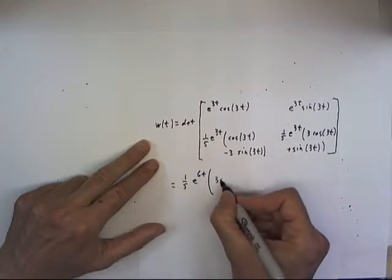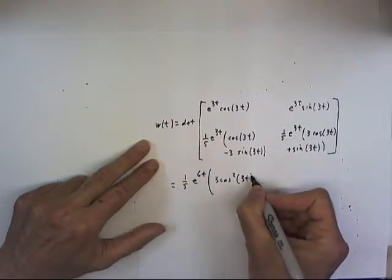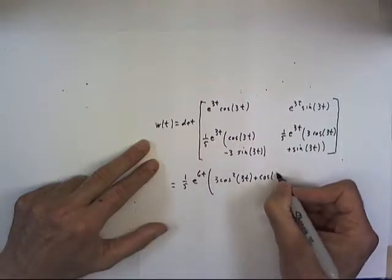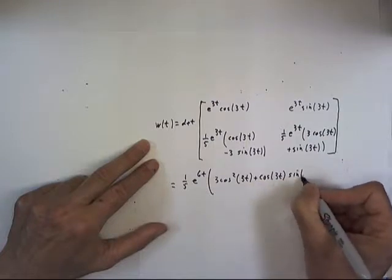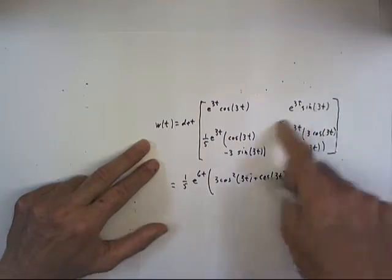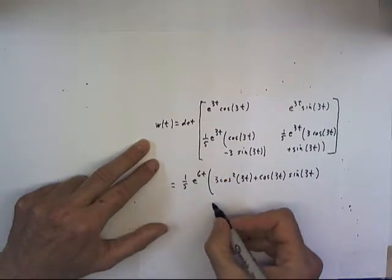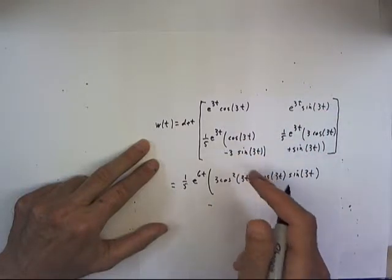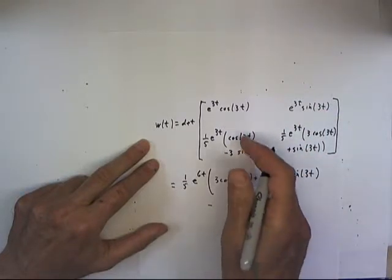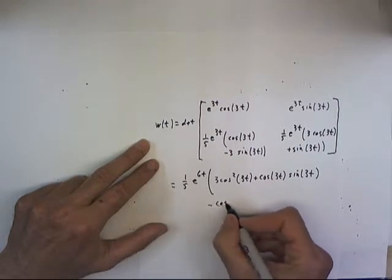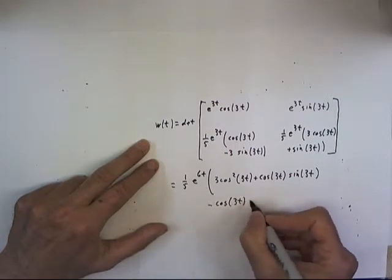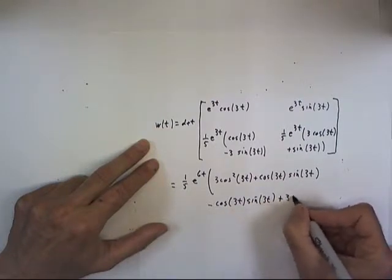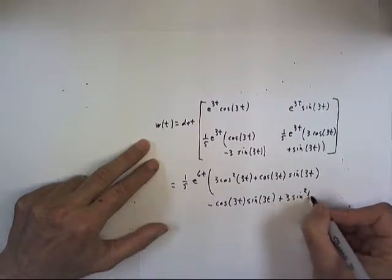We get 3 cosine squared of 3t plus cosine of 3t sine of 3t. And then from the other diagonal we get minus sine of 3t times distributed through this expression. So we get cosine of 3t sine of 3t plus 3 sine squared of 3t.